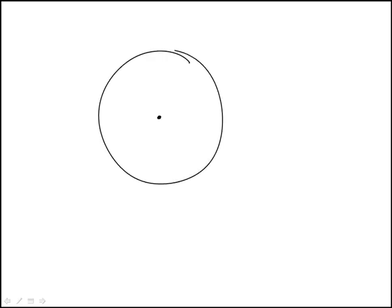We're given that a circular pizza with a 16-inch diameter, which means the radius is 8 inches, is cut into 12 equal slices. What is the area in square inches of each slice?